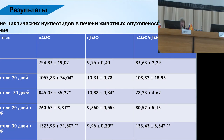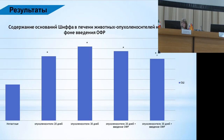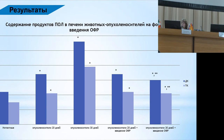After introducing ozone intraperitoneally — as ozonized saline — and into the tumor, administered every two days, animals were decapitated and liver tissue was analyzed. Looking at the primary lipid peroxidation products compared to 20-day and 30-day non-treated animals, we can see they start shrinking after the introduction of ozone. In ozone-treated 20-day and 30-day tumor animals, there are significant reductions, showing that the antioxidant system is being restored.